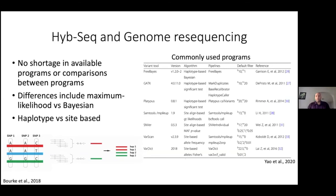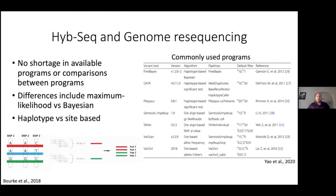We've just covered RAD-seq, both de novo and reference-based. We're now going to move into HyperSeq and genome resequencing, which has a lot of the same bioinformatic steps as RAD-seq reference-based, but with different programs for SNP calling. There's no shortage of available programs or even recent comparisons. Some of the main differences include maximum likelihood versus Bayesian framework, or haplotype versus site-based approaches. In the site-based approach, each site is taken individually and the SNP is called. However, the haplotype-based versions take the entire string — a red, blue, and green string of SNP1, SNP2, SNP3 — and call the SNPs that way. Whatever is most important for your project depends on your questions, but different options are definitely available.